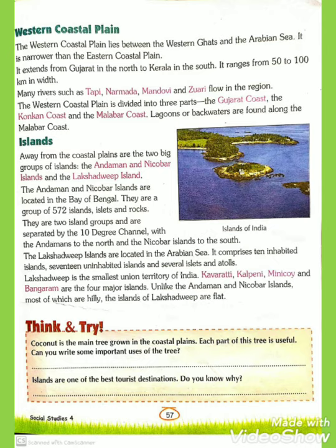Now I will tell you about the islands. A piece of land that is surrounded by water on all sides is called an island. Away from the coastal plains are two big groups of islands: number one, the Andaman and Nicobar Islands, and the other is the Lakshadweep Islands. Both are a part of Union Territory.